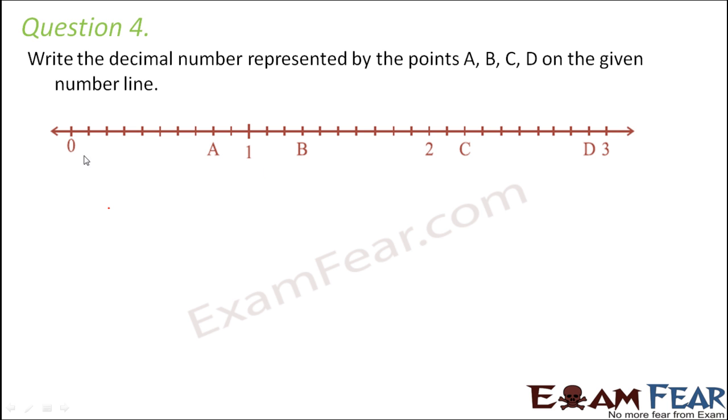Now when we closely look at the number line, what do we see? Where do we have our zero? We have the zero here and this is one. Now in between zero and one, how many divisions do we have?